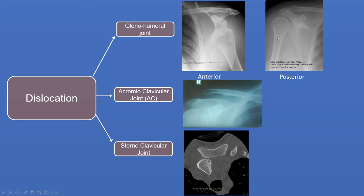An anterior dislocation is much easier to identify. These require reduction and may need a stabilisation procedure at a later date. The AC joint can be dislocated where the coracoclavicular ligaments are disrupted and the end of the clavicle sits up. Depending on how much it sits up determines whether surgery is needed — a simple strain or slight displacement is less likely to need surgery than a complete disruption where the whole shaft sits way away from the AC joint. Medially, the sternoclavicular joint can also be dislocated and is sometimes more difficult to identify, usually based upon history and clinical findings, with a CT scan helping to confirm it.